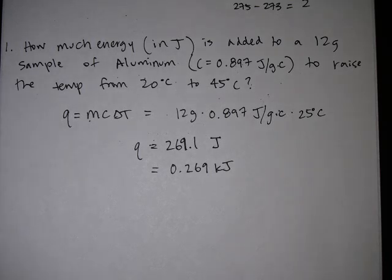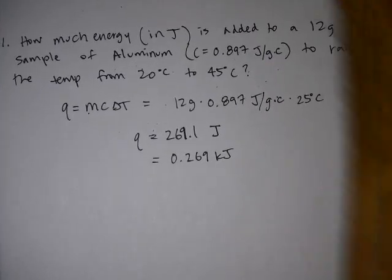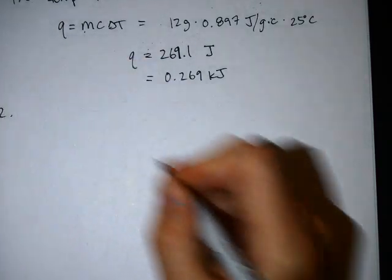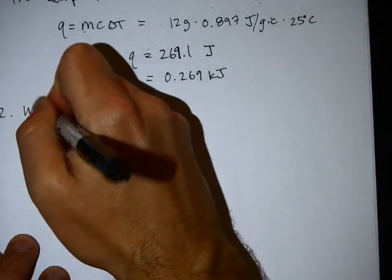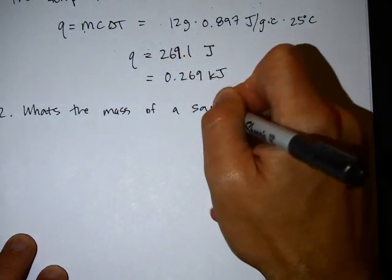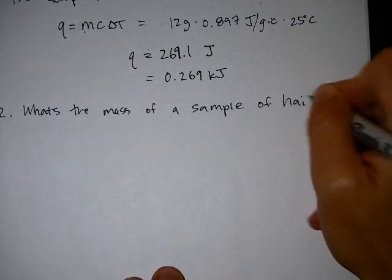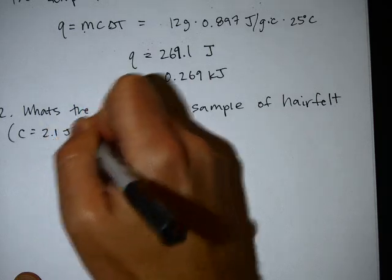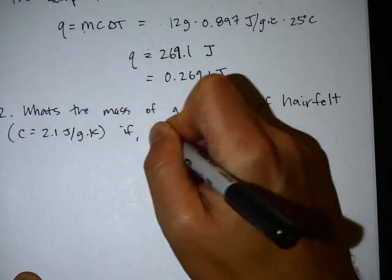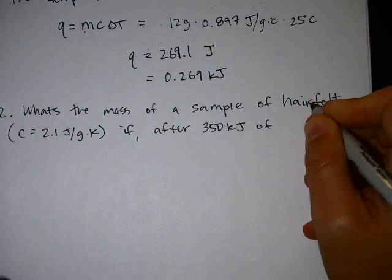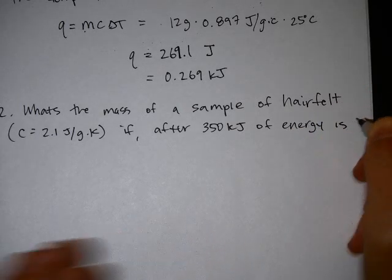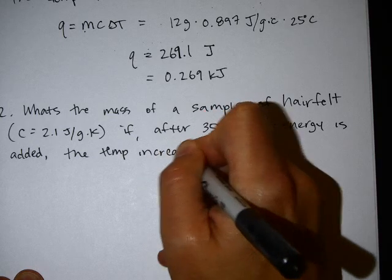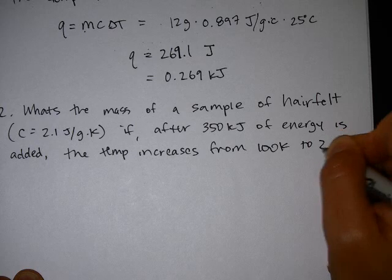Questions on the easiest kind of problem? Then you, my friends, are ready for the next easiest kind of problem. Number two. And I'm just doing three of these. Alright, this one. What's the mass of a sample of hair felt? Which has a specific heat of 2.1 joules per gram times Kelvin. If, after 350 kilojoules of energy is added, the temp increases from 100 Kelvin to 200 Kelvin.